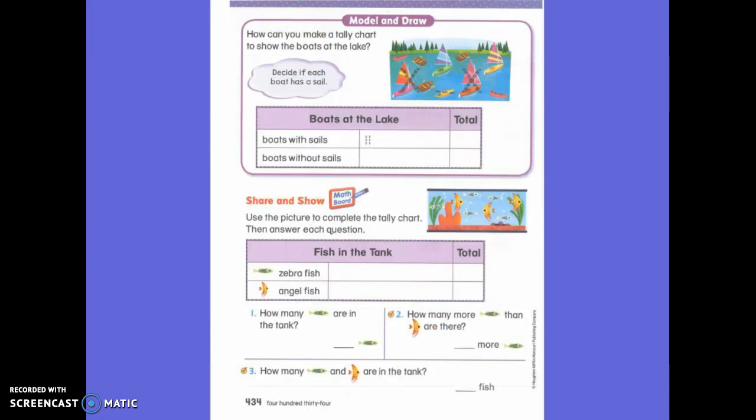How can you make a tally chart to show the boats on the lake? Okay. We're going to cross it out as we put the tally chart. So this one says boats with sails. So I need to only do the boats with sails. So it already has the two boats with sails and the two tally marks. Are there more boats with sails?